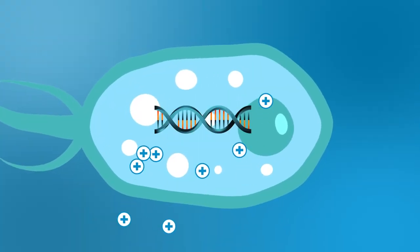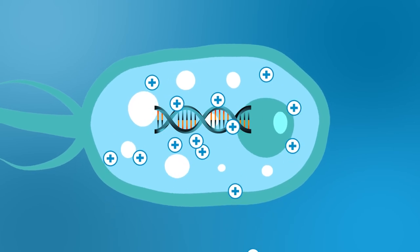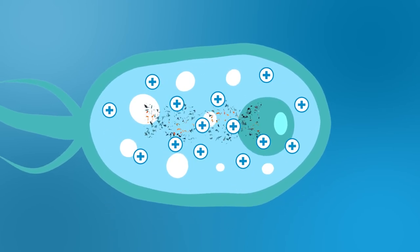Germs don't stand a chance against these silver ions. They permeate into the germ cells and render their DNA harmless.